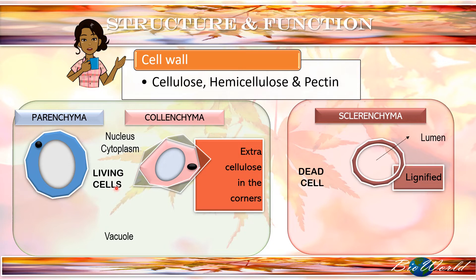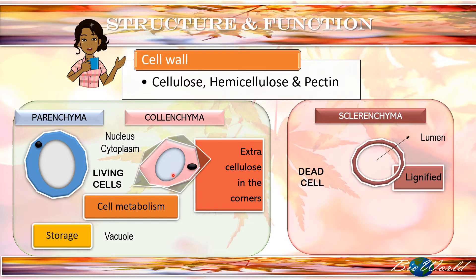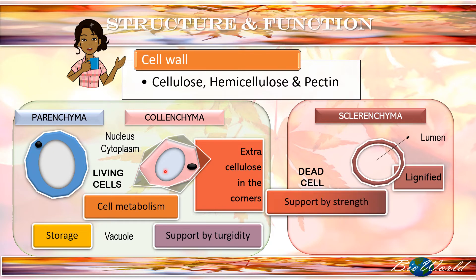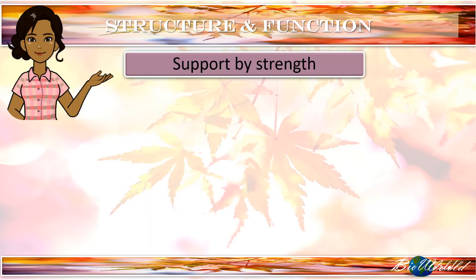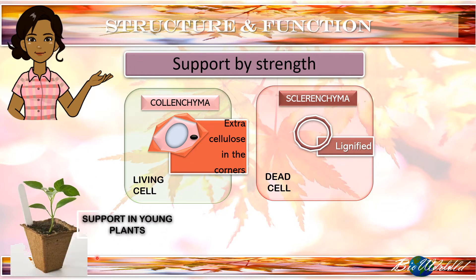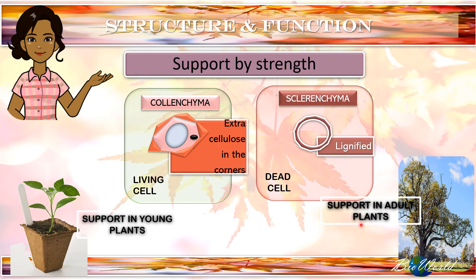Since parenchyma and collenchyma are living cells, they continue to carry out cell metabolism. The presence of the vacuole enables them to function as storage cells, and the vacuoles also provide turgidity that helps support the plant. The extra cellulose in the collenchyma and the lignification in the sclerenchyma also provide the cell with strength to support the plant. Collenchyma is more suitable for support in young plants, whereas sclerenchyma is suitable for support in adult plants.